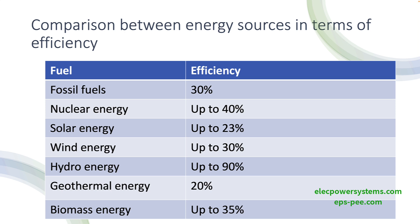Solar energy is a renewable energy source that uses photovoltaic (PV) panels to convert sunlight into electricity. The efficiency of solar panels has been increasing over time, with some panels achieving efficiencies of up to 23 percent. The advantage of solar energy is that it is clean and renewable, but the disadvantage is that it is dependent on the availability of sunlight.